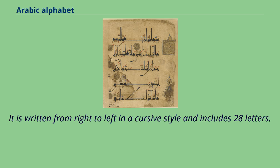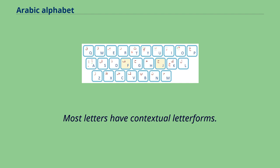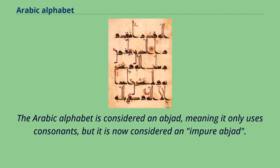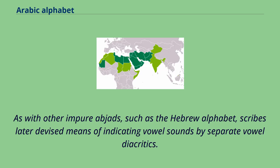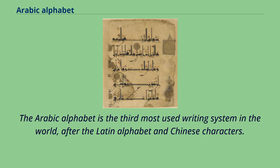It is written from right to left in a cursive style and includes 28 letters. Most letters have contextual letter forms. The Arabic alphabet is considered an abjad, meaning it only uses consonants, but it is now considered an impure abjad. As with other impure abjads, such as the Hebrew alphabet, scribes later devised means of indicating vowel sounds by separate vowel diacritics.